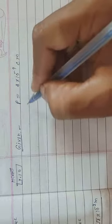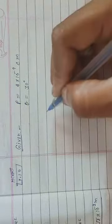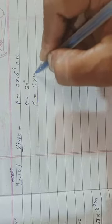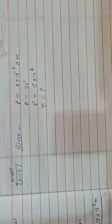Next quantity, angle is given. Theta, how much is given? 30 degrees. And what else is given? Electric field magnitude is given as 5 into 10 to the power 4. We have to calculate tau.